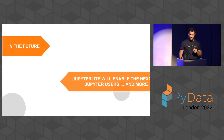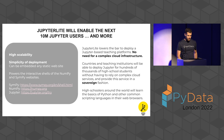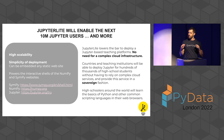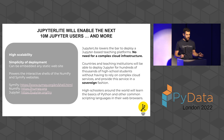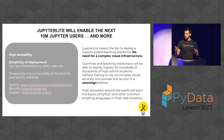In the future, JupyterLite will enable the next 10 million Jupyter users and more. Why? Scalability. Anyone who can host static assets on the web can embed a console on their website without connecting to a third-party service. If you can host an Apache server somewhere, that would work. It already powers interactive shells on websites with millions of monthly visitors, such as Jupyter and NumPy. It really lowers the bar to deploy a Jupyter-based teaching platform — you don't need a scalable cloud infrastructure. Countries and teaching institutions that don't have that infrastructure readily available won't need to rely on other countries to deploy a sovereign service for their schools and universities.